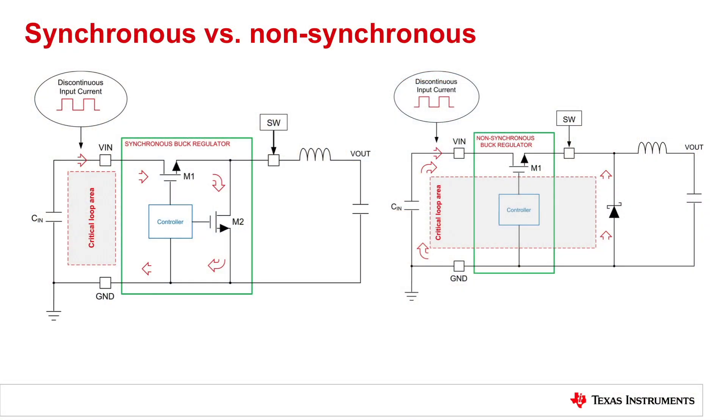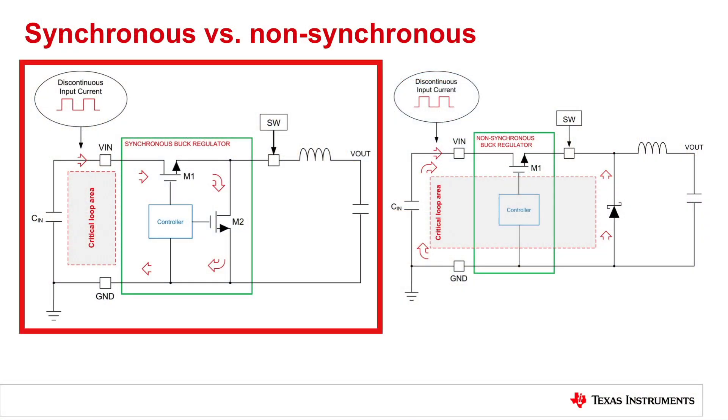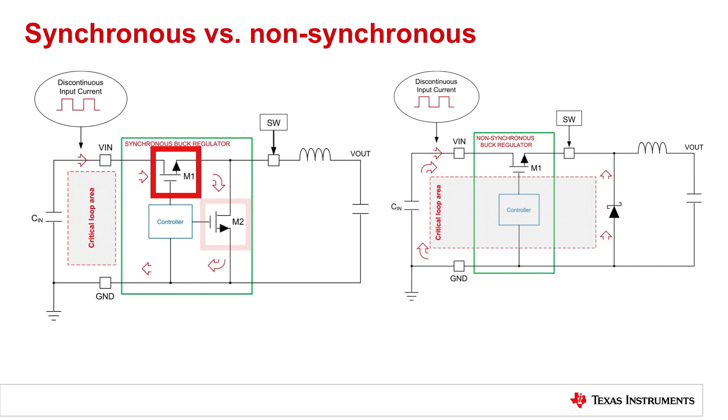First, let's take a look at the differences between a synchronous and a non-synchronous converter. We see on this slide on the left-hand side a typical synchronous buck converter. We can see that the power MOSFETs M1 and M2 are inside the IC, so therefore they're in very close proximity.